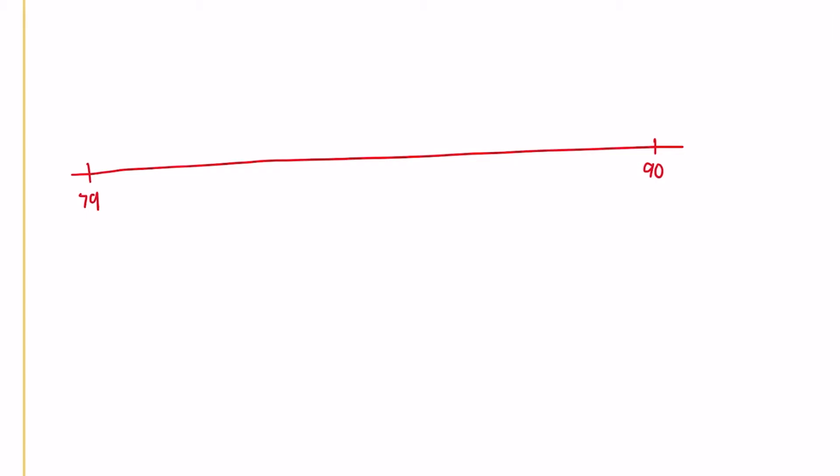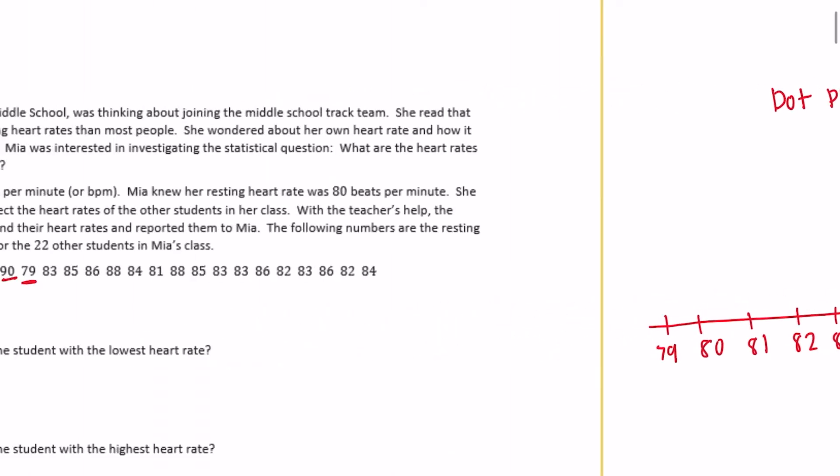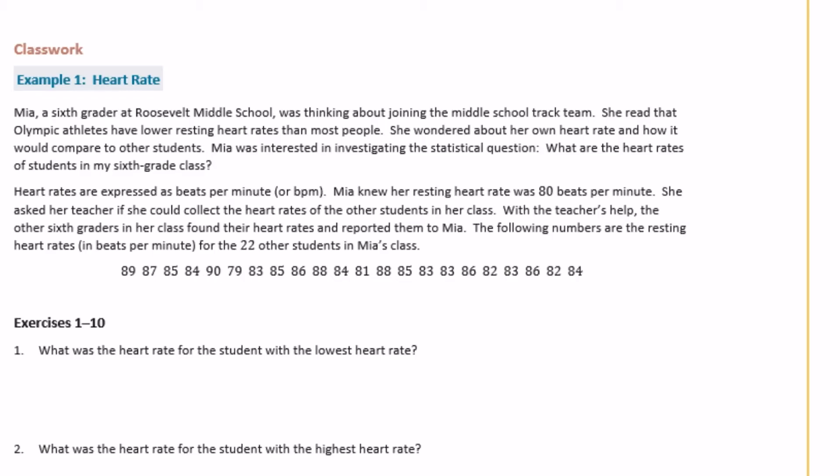80. Let's see, right in the middle would be about like 85. So 86, 87, 88, 89, and then I'll fill in these others. Okay, so now what we're going to do, it's called a dot plot. So let's say dot plot of heart rate. So we're literally going to put a dot on the plot for every number that we see here. So let's start over here.